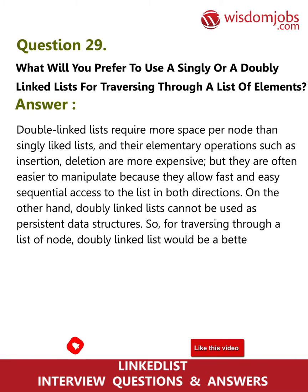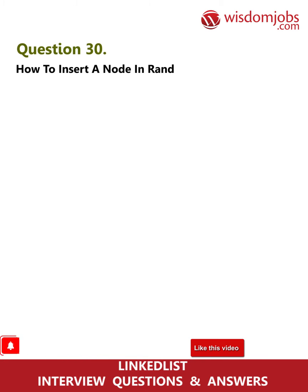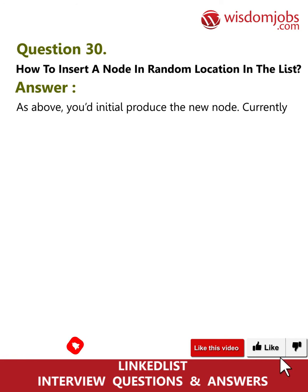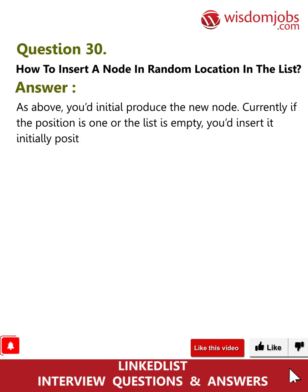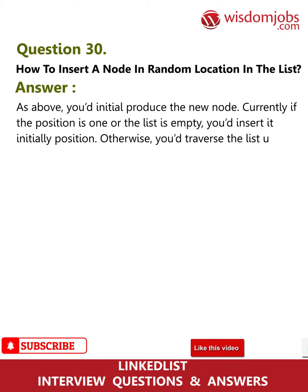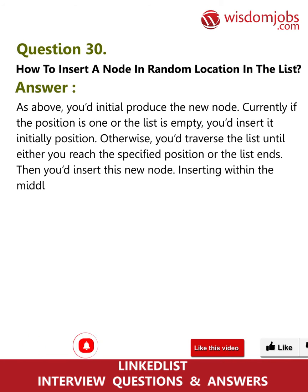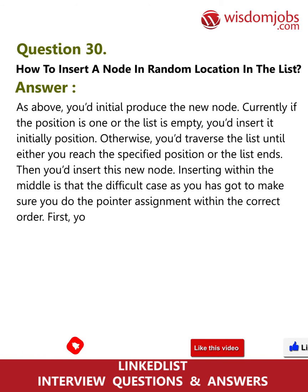Question 30: How to insert a node at a random location in the list? First, create the new node. If the position is one or the list is empty, insert it at the beginning. Otherwise, traverse the list until you reach the specified position or the list ends. Then insert the new node. For inserting in the middle, the difficult part is doing the pointer assignment in the correct order — first set the new node's next pointer to the node before the insertion point.